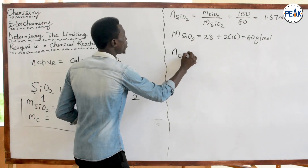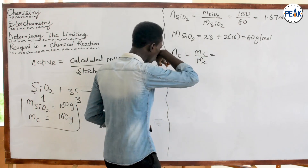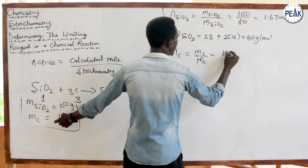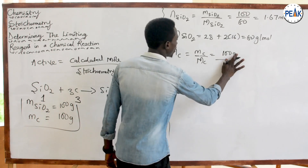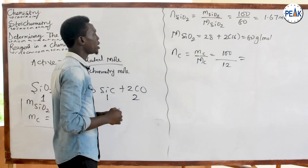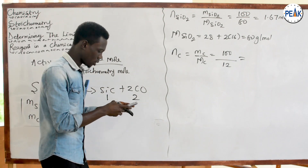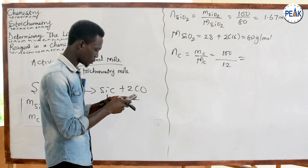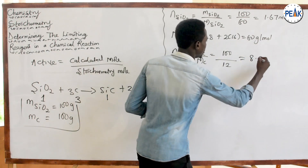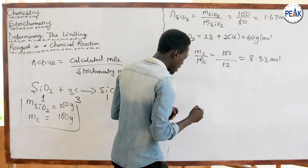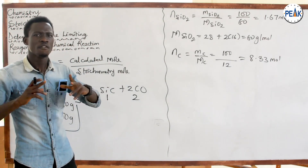Now for carbon: moles of C = mass ÷ molar mass = 100 ÷ 12 = 8.33 moles. This is the calculated mole for carbon. I have now successfully calculated the calculated moles for both reagents.